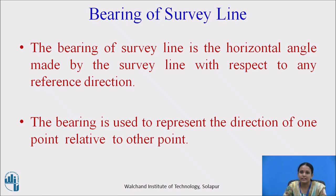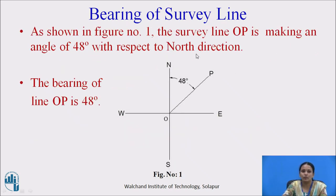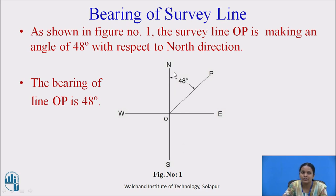The bearing of a survey line is the horizontal angle made by the survey line with respect to any reference direction. If you observe this figure, the survey line OP is making the horizontal angle 48 degrees with respect to the north direction. The bearing of lines is used to locate the direction of one line or one point with respect to the other point.